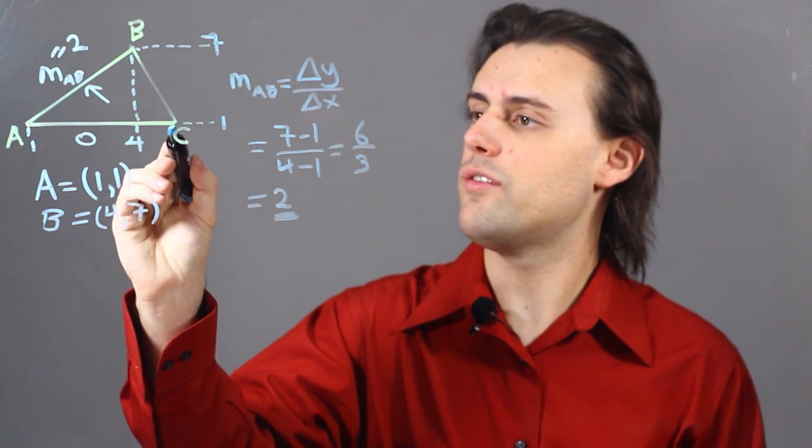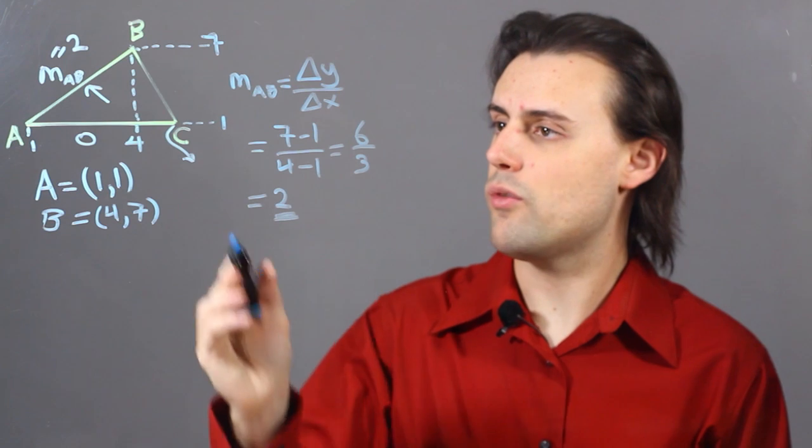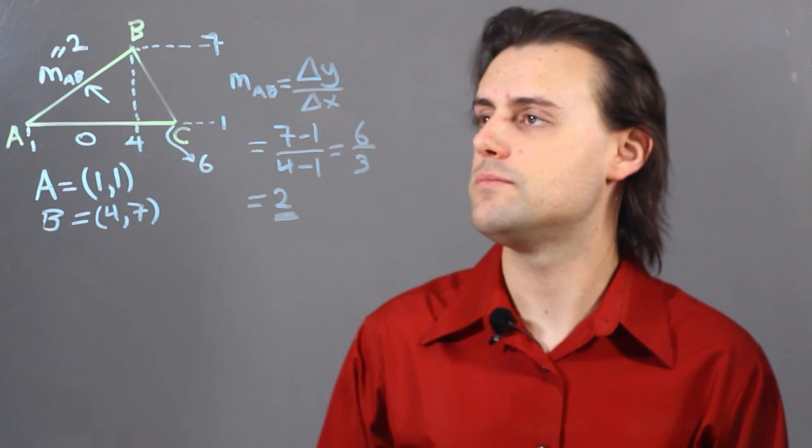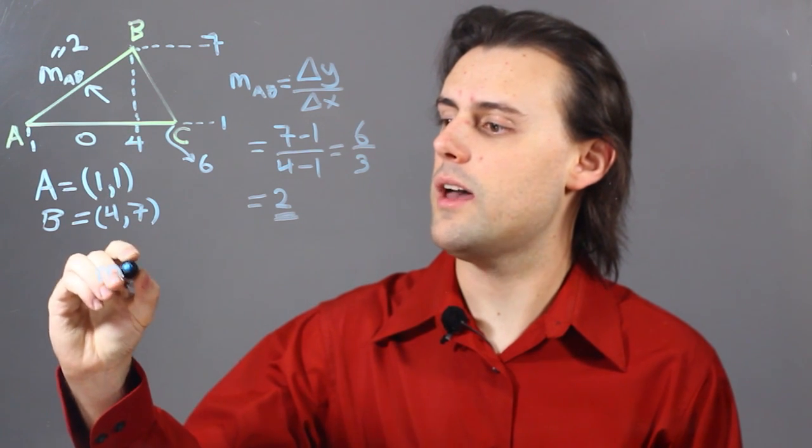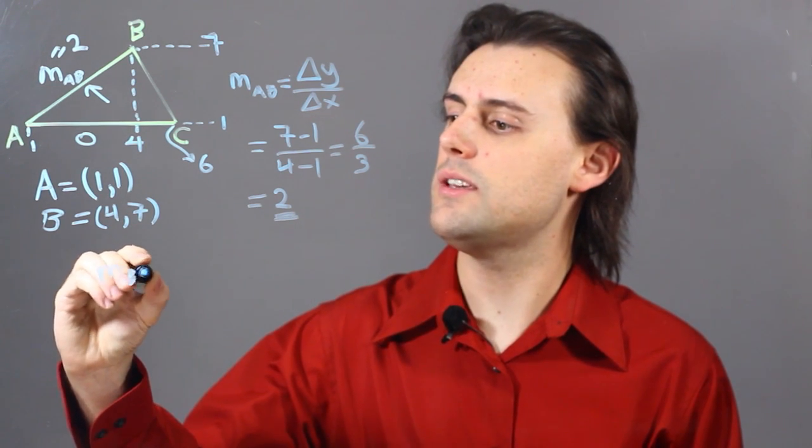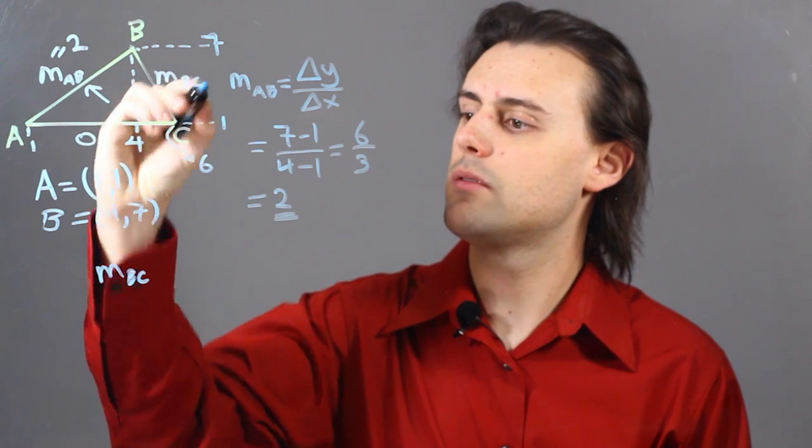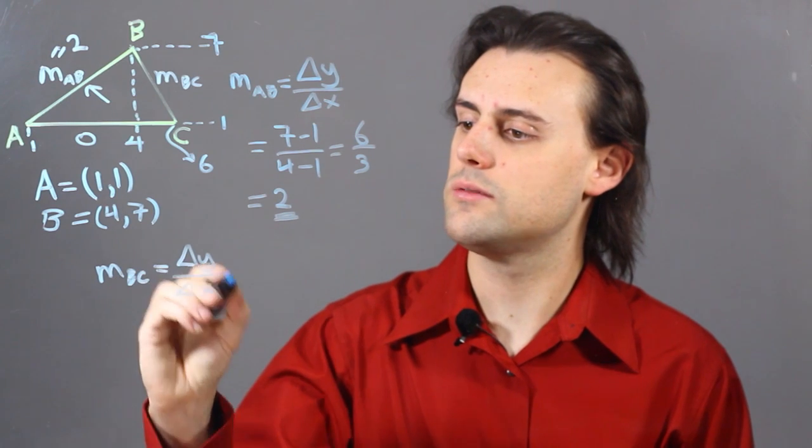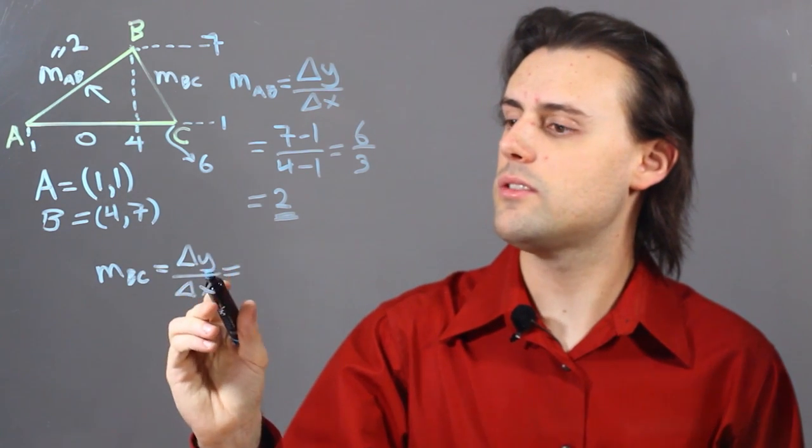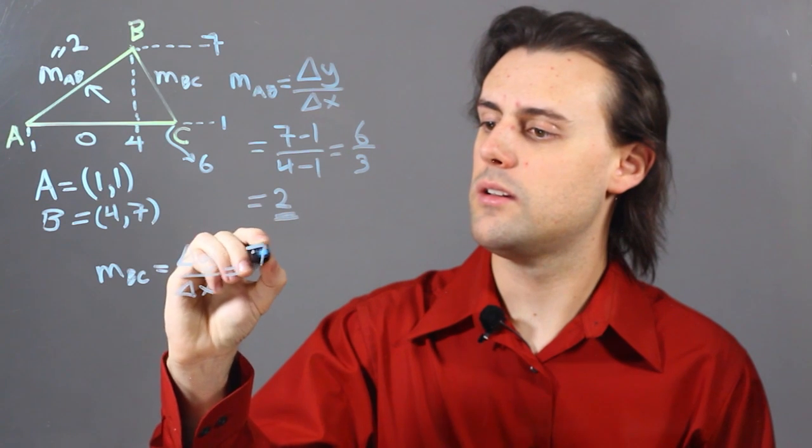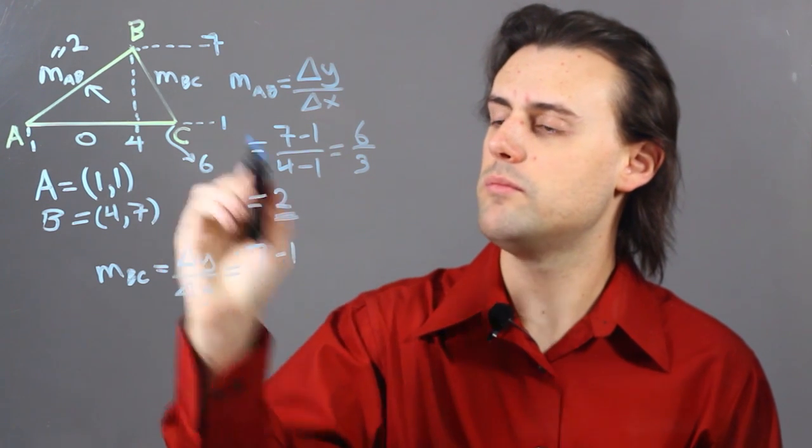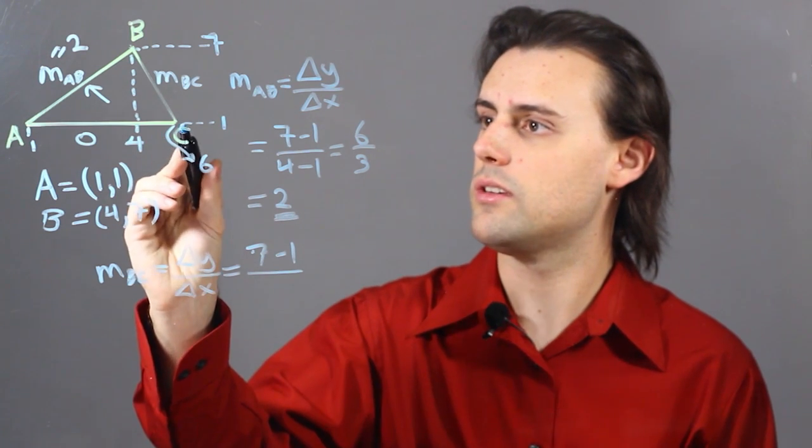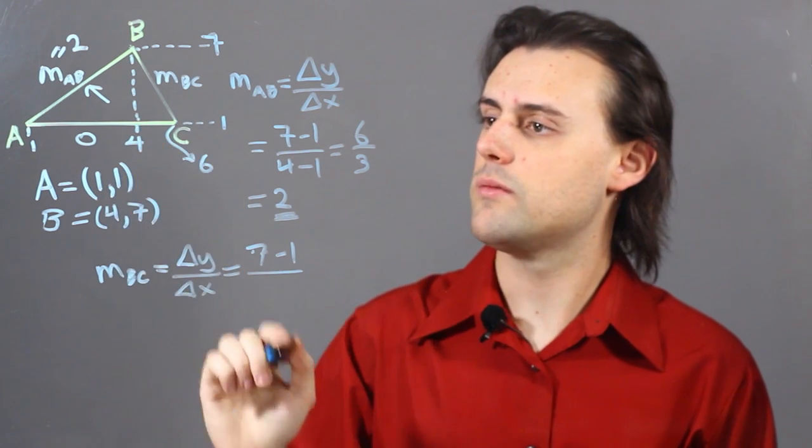And, if the x coordinate for point C was equal to 6, then I could calculate m_BC, which is this slope by considering delta y over delta x. In this case, delta y would be 7 minus 1, and I would divide that by delta x, which is 4 minus 6.